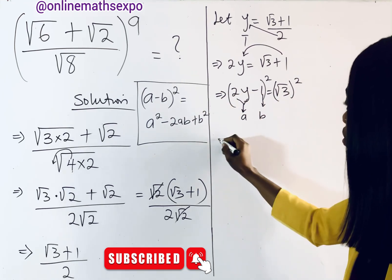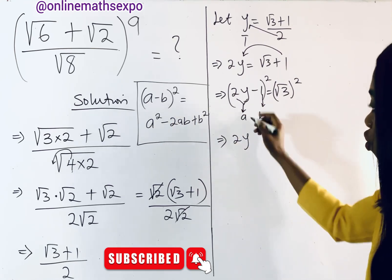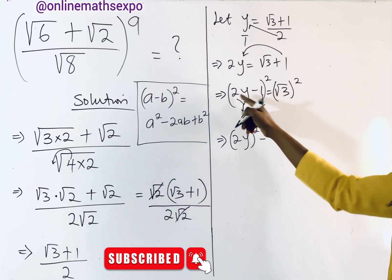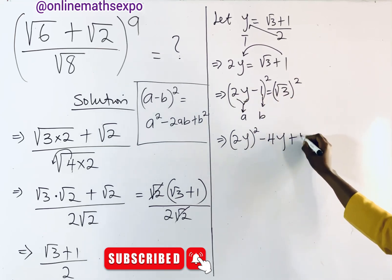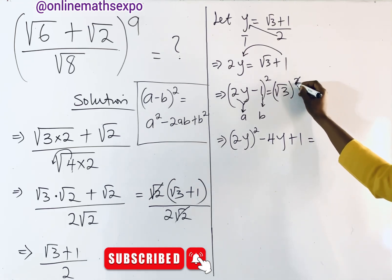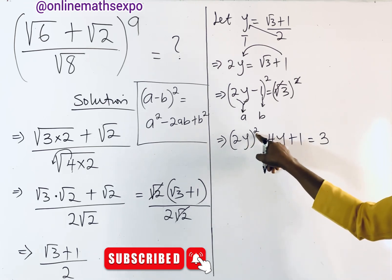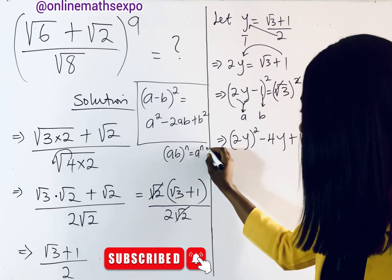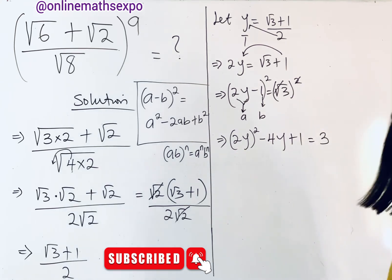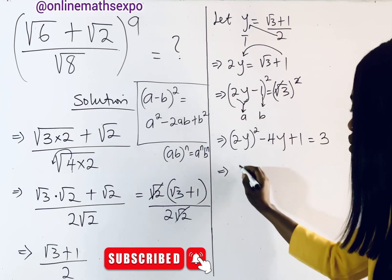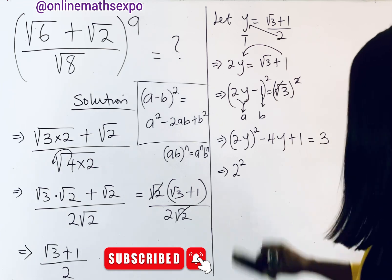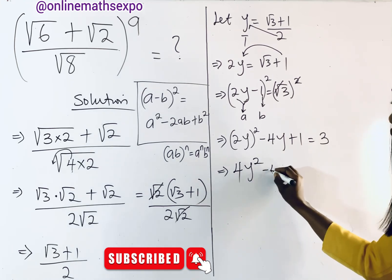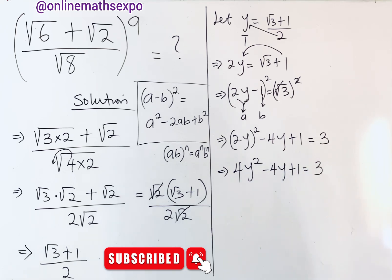Applying the binomial formula, (2y minus 1)² gives us (2y)² minus 2 times 2y times 1 plus 1², which equals three (since squaring root three removes the radical). So we get 4y² minus 4y plus 1 equals 3.